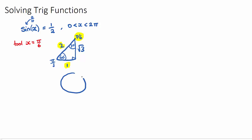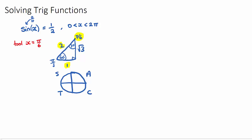If we draw our unit circle with our quadrants — All Stations To Central: A, S, T, C — we need to think about: sine gave us a positive ratio of 1 on 2. What are the positive sine quadrants? Positive because we had a positive ratio. The positive sine quadrants are the S quadrant and of course the A quadrant. A stands for All, S stands for Sine, T is for Tan, C is for Cos.